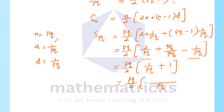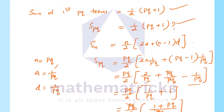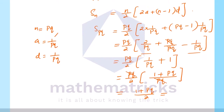Combining fractions in the bracket: pq/2 × [(2 + pq - 1)/pq] = pq/2 × (pq + 1)/pq. The pq in numerator and denominator cancel, giving (pq + 1)/2, which equals ½ × (pq + 1).